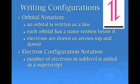Now, there are two ways that we write electron configurations. You can either write the orbital notation, that's where we just saw it, it's where an orbital is written as a line, the line going across, each orbital has a name written below it, that's where we saw the 1s, the 2s, and the 2p, those were the names, and then we draw the electrons as arrows. And they go up and down. Now, secondly, we can either write it as electron configuration notation, which we write the number of the electrons in the sublevel is added as a superscript. So instead of writing 1s and drawing two arrows, we would just write 1s2 and put it as a superscript. A superscript means that it goes on top.